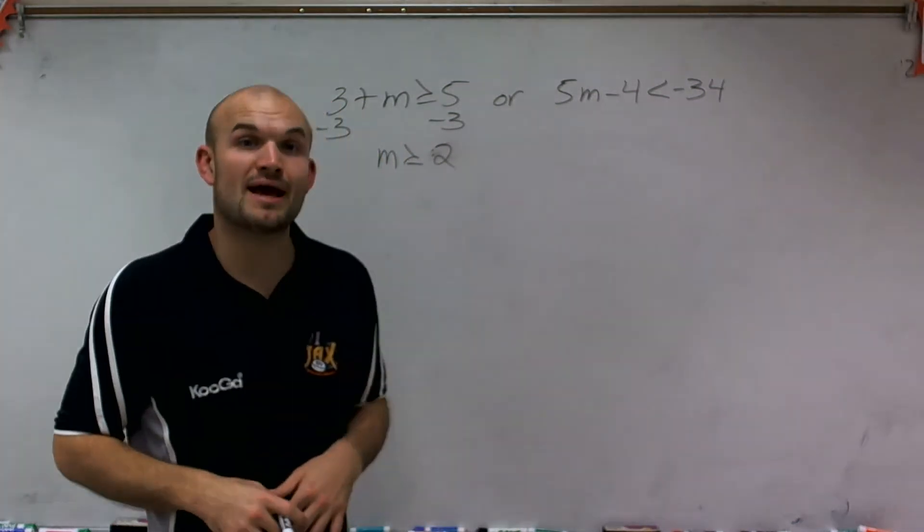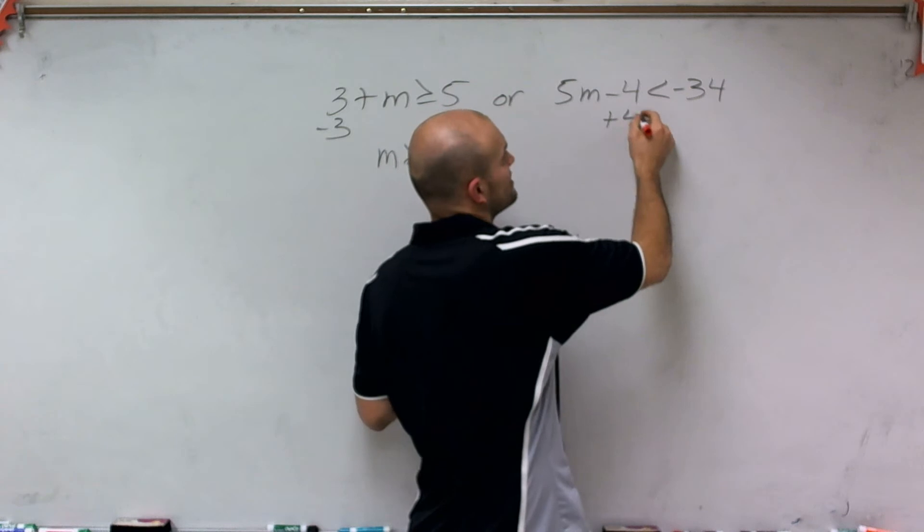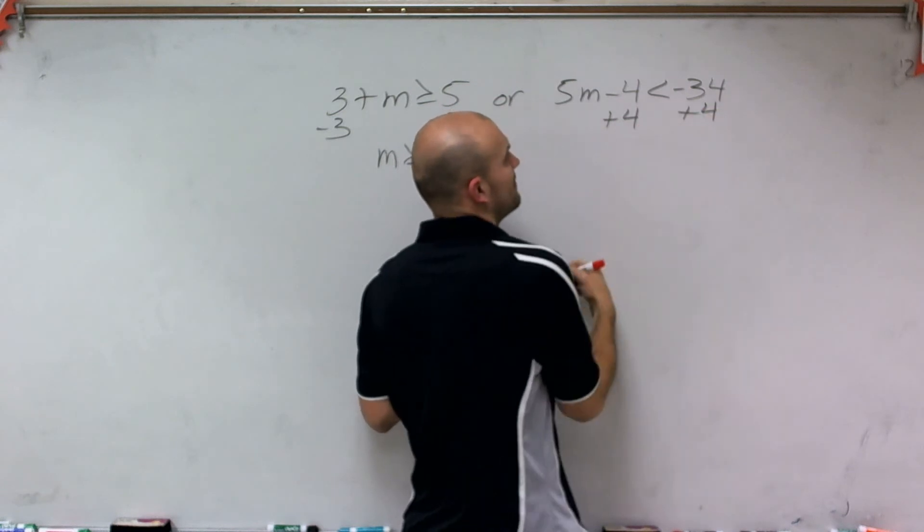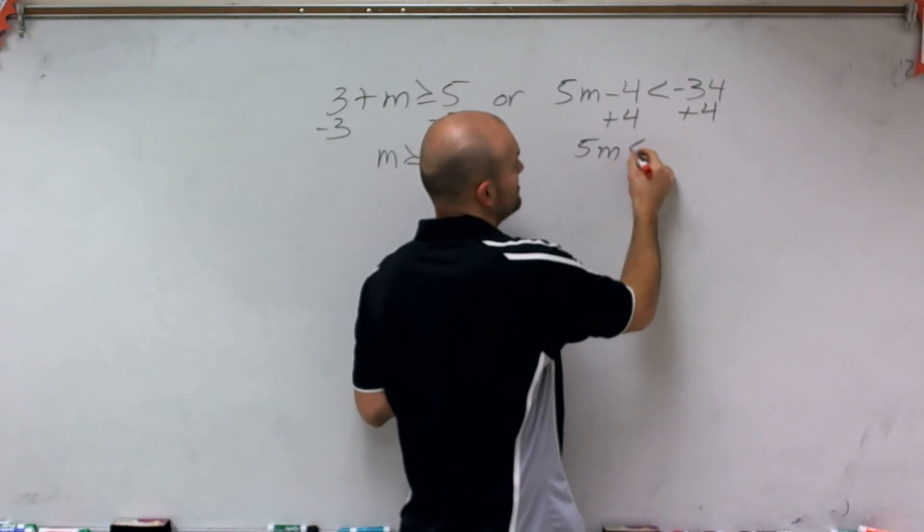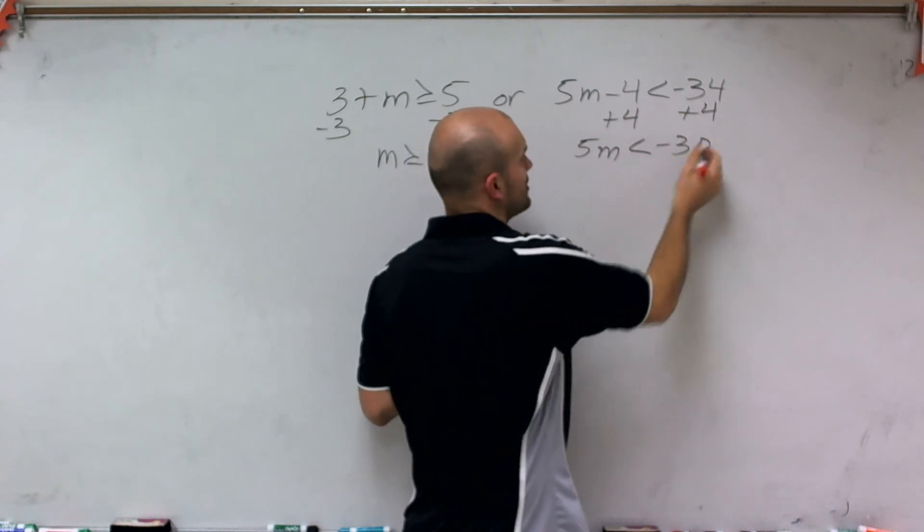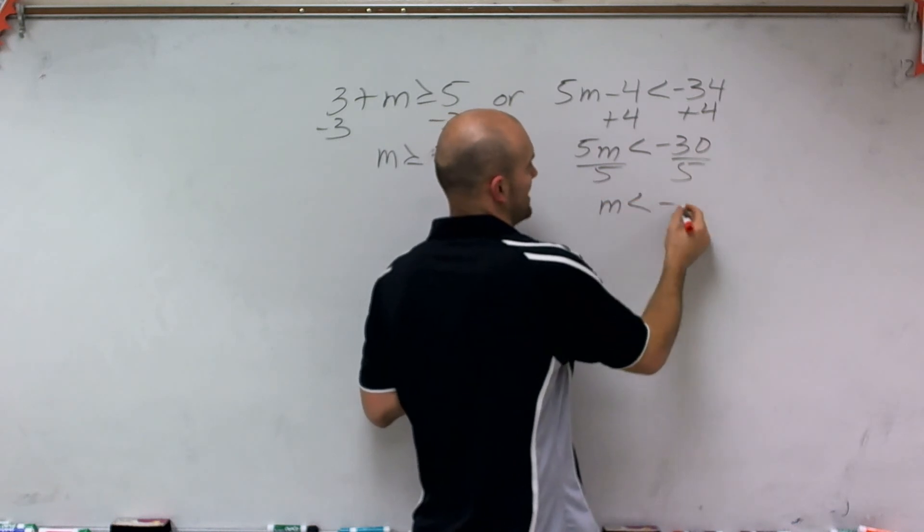Then over here, I isolate my m by using my inverse operation. So I have 5m minus 4. The first inverse operation I use is add 4 to both sides by addition property of equality. So therefore, I have 5m is less than negative 30. Divide by 5, and m is less than negative 6.